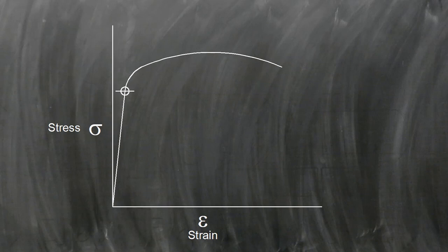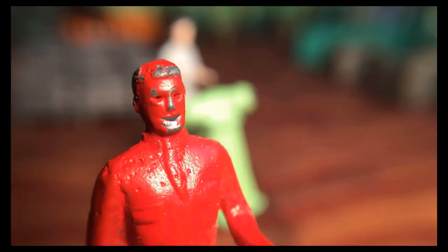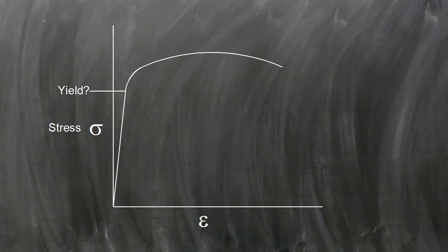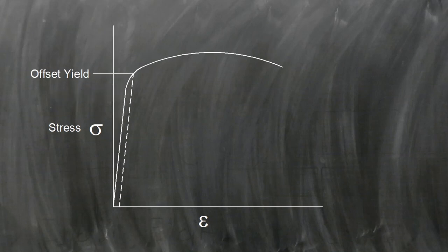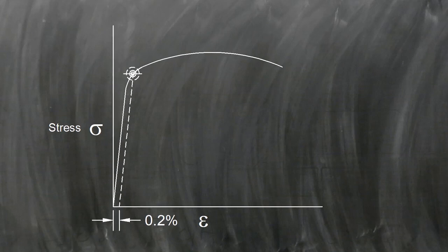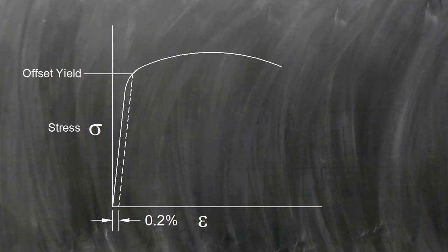It can be seen on a stress-strain diagram where the relationship between stress and strain stops being a straight line. The yield point shows up in a subtle sort of way — the transformation from elastic to plastic is quite gentle. In order to get good, repeatable results, the offset yield is often used. To find the offset yield, a line that is parallel to the elastic region is drawn from the 0.2% position on the strain axis. This line will intersect the stress-strain diagram at a single point, and the height of this point on the stress axis is the offset yield strength.